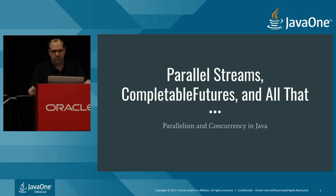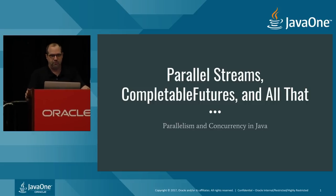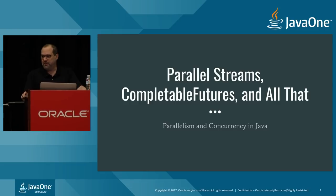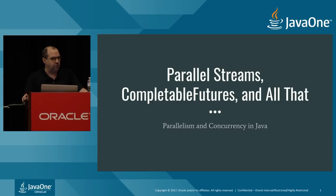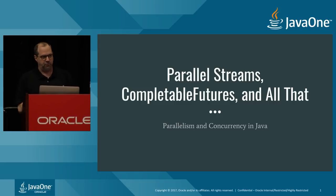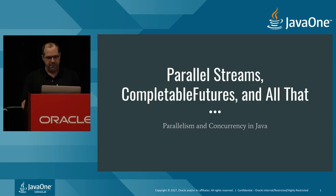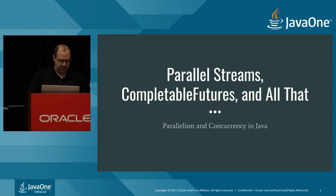The title of this is Parallel Streams, Completable Futures, and all that. The idea is to look at the concurrency mechanisms and parallel mechanisms inside of Java. I was specifically referring to Java 8, but everything carries over to Java 9. They've added a few methods to the API in Java 9, but basically it's the same exact stuff. So anything I'm going to talk about is applicable to both 8 and 9.